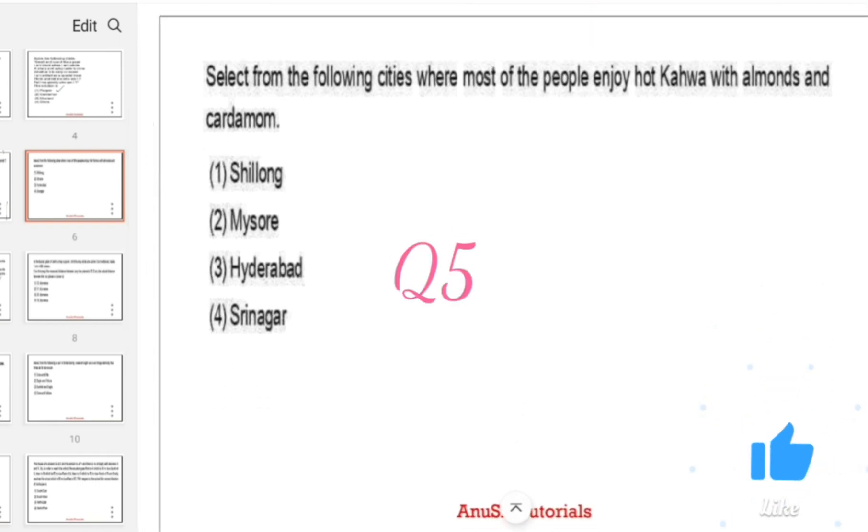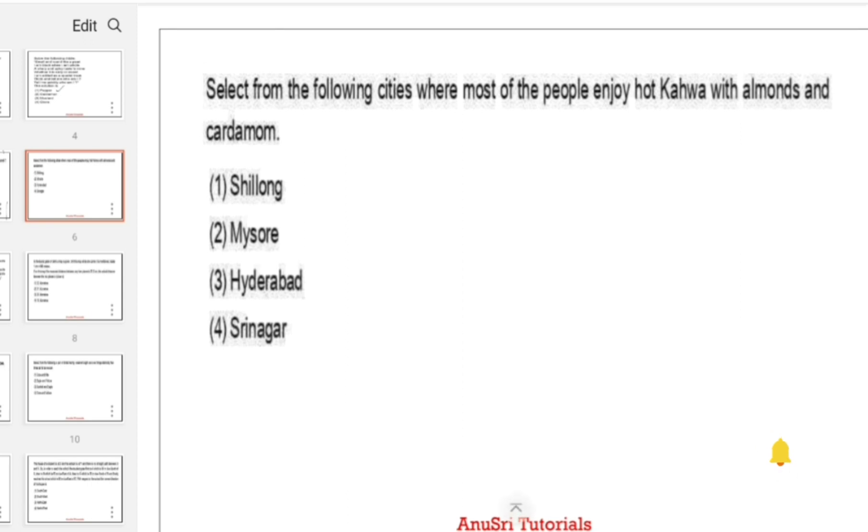Select the following cities where most of the people enjoy kahwa with almonds and karma. Options: Shillong, Mysore, Hyderabad, Srinagar. Kahwa is famous in Jammu Kashmir, so the option is Srinagar.